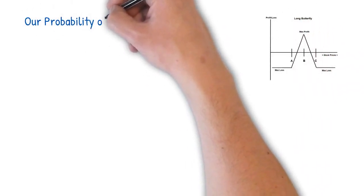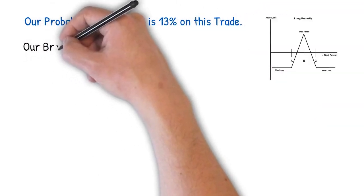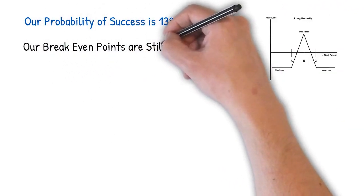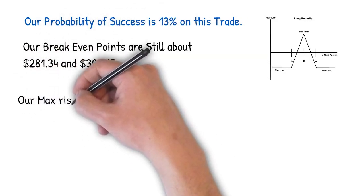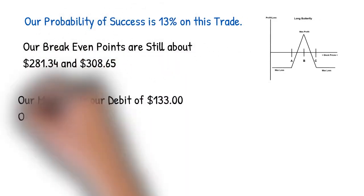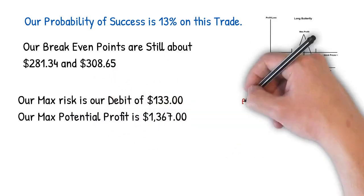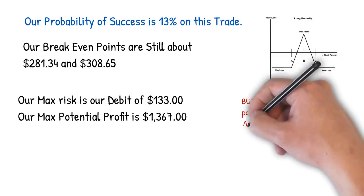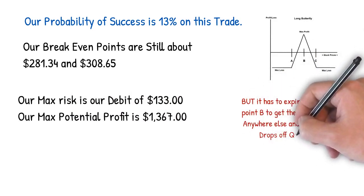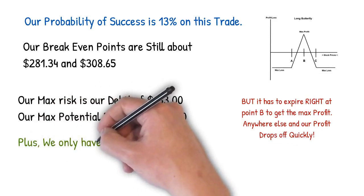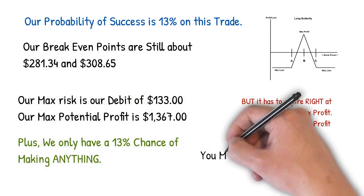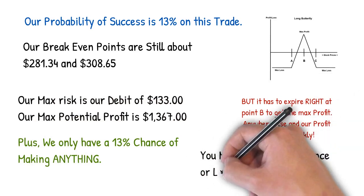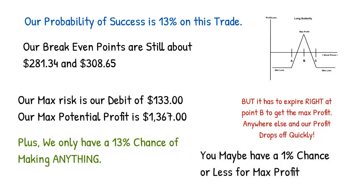On this trade, our probability of success is only 13%. Our break even points are still about the same, $281.34 and $308.65. Our maximum risk is our debit of $133. Our maximum potential profit is $13.67, which sounds really good. But Tesla has to expire exactly at point B to get max profit. Anywhere else and our profit drops off very quickly. In truth, you probably have about a 1% chance or less at hitting max profit on this one.